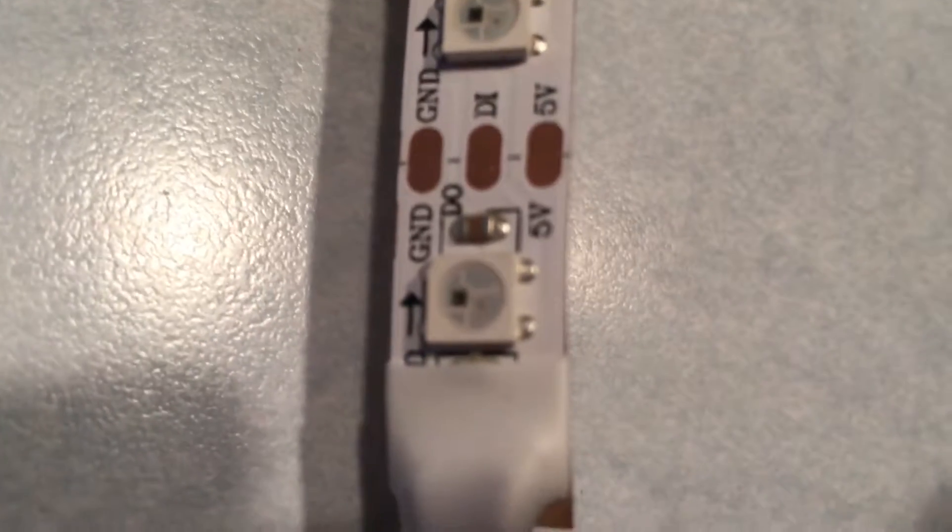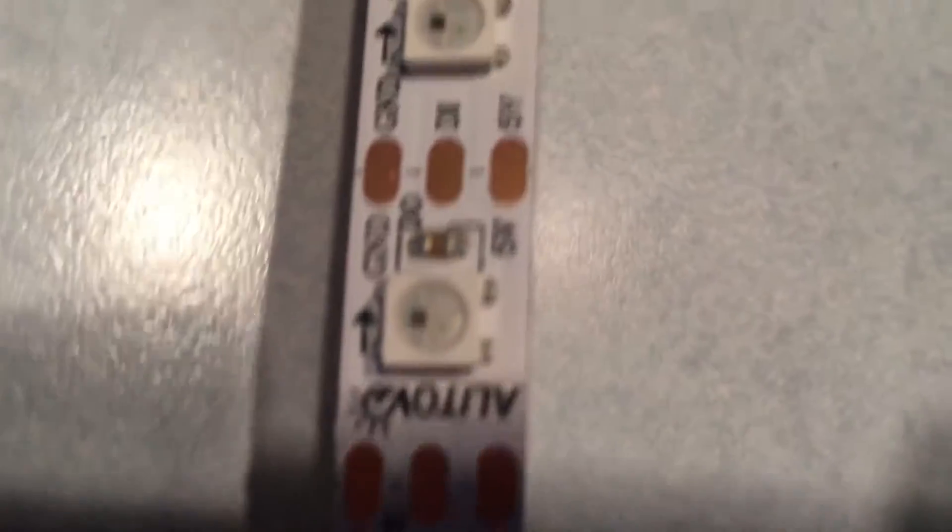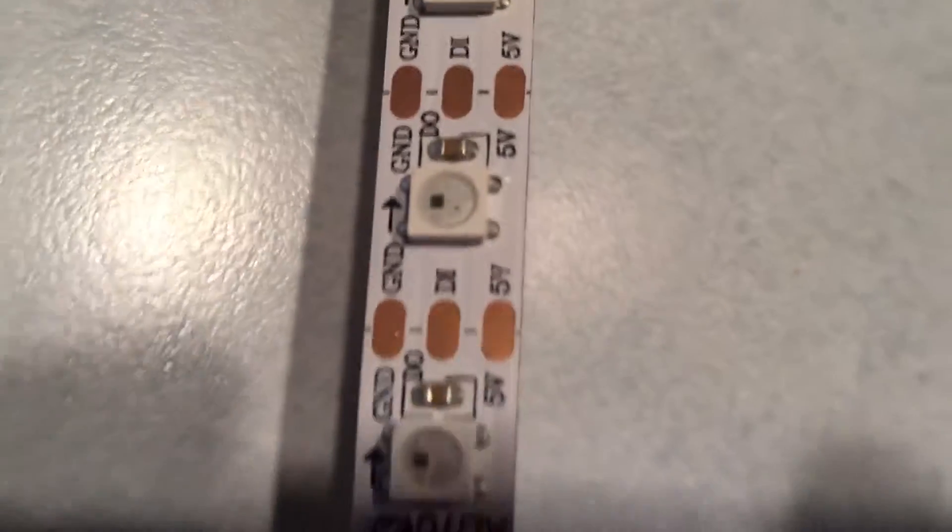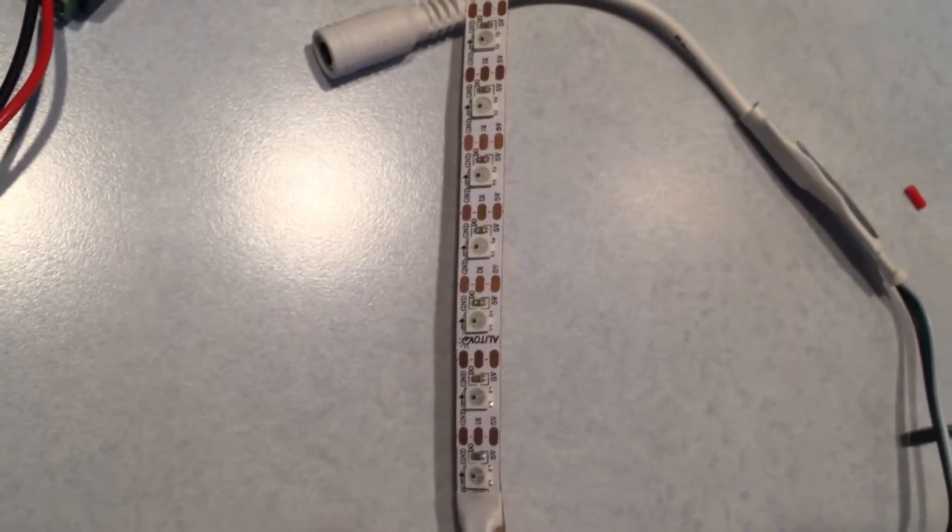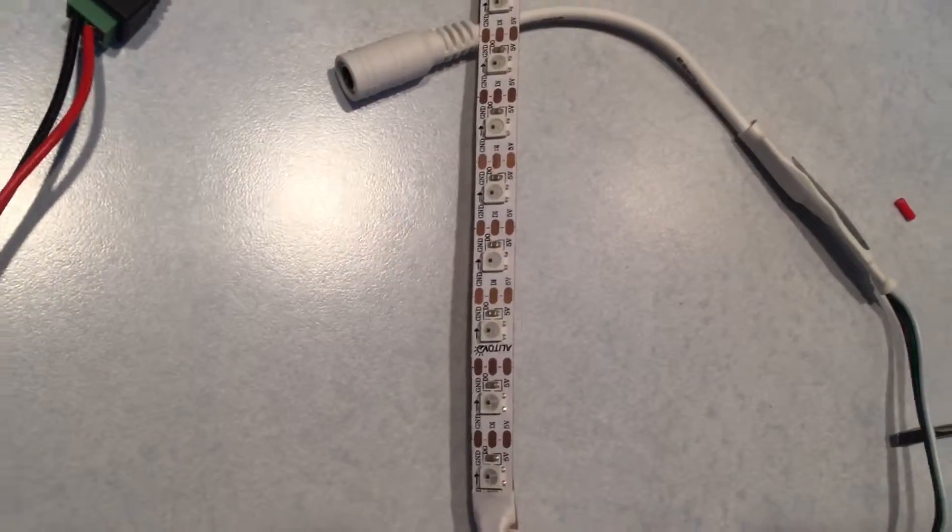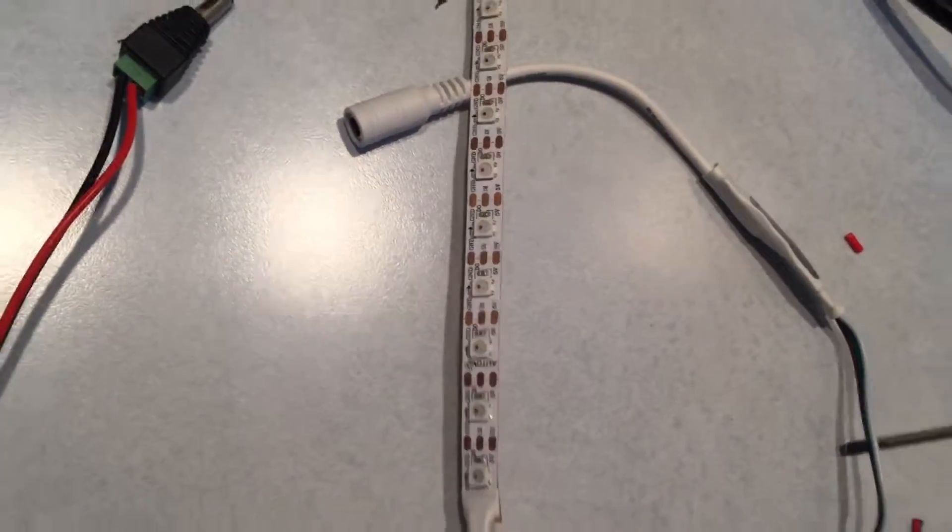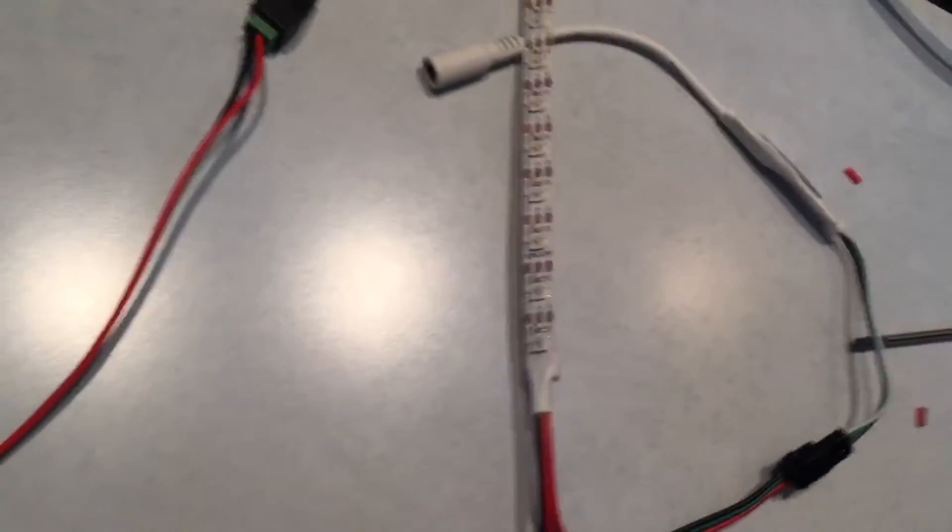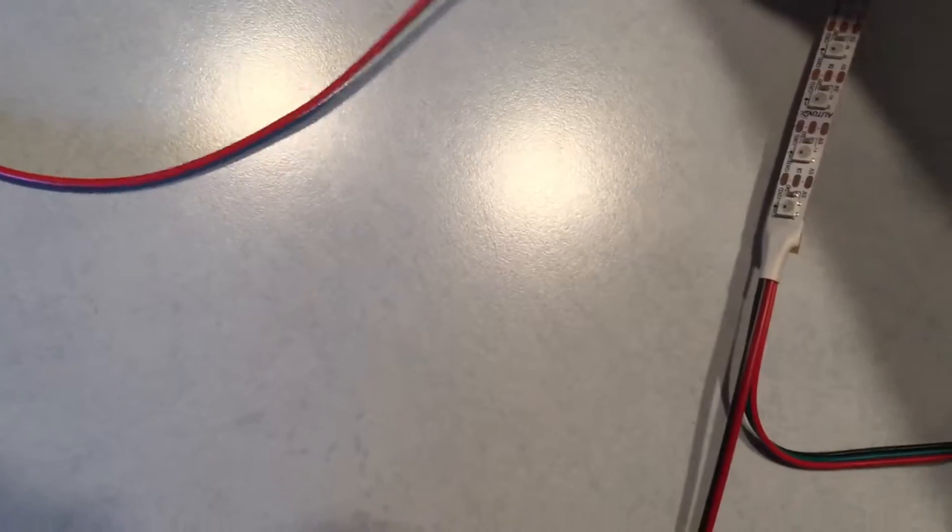This is what one of the strips looks like. The LEDs are pretty dense on the strip. Some of these strips have the LEDs farther apart but I wanted to have a real high density. Let's see if I can plug one in, it's probably going to get way too bright to see it on the camera but let's see what happens.